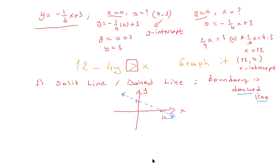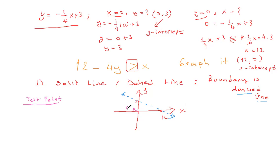Now it's a dashed line since the question is only 'greater than.' This dashed line divides the xy coordinate plane into two half-planes — the upper part and the lower part. One of them is the solution. Which one? We use a very simple method: the test point.